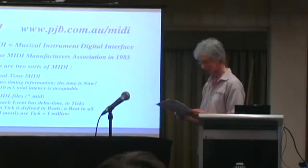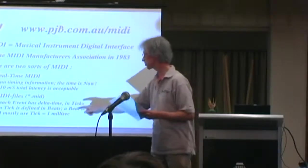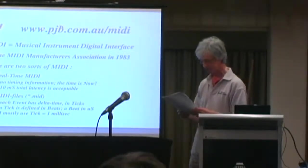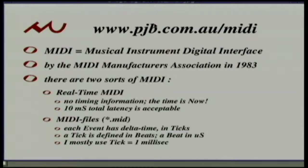The second form is that MIDI can be stored in files — .mid files. These files have to include their timing information, so it's a different format but the same information. Each MIDI event has a delta time since the previous event, measured not in anything normal but in ticks. You define the tick rate yourself in the file in beats, and the beats you define in microseconds. I mostly use one tick equal to a millisecond, but typically MIDI files have different tick rates, making them hard to merge, so most of my software normalizes everything to a millisecond tick.